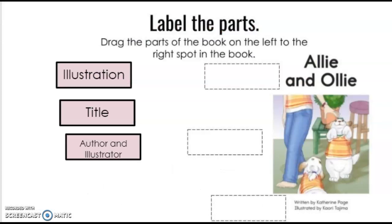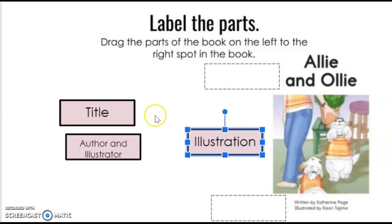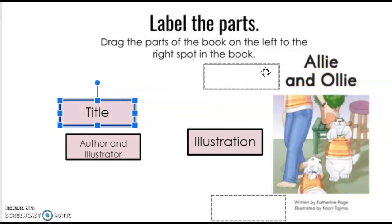Now we're going to work together to label the different parts. Here I have a front cover of a book called Allie and Ollie. You can see my illustration of the dogs and some more words down here. I have word boxes that I'm going to drag and label beside the correct part. The first box says illustration — if you pointed to the picture of the dogs, you are correct. I'm going to drag the box that says illustration beside the picture. My next box says title — the title is Allie and Ollie, so let's drag that box beside the title. Very good job.